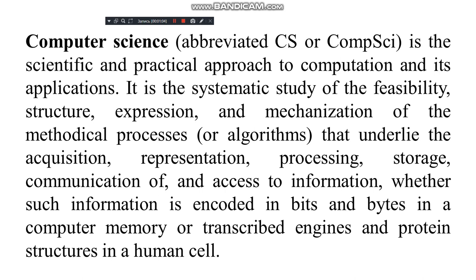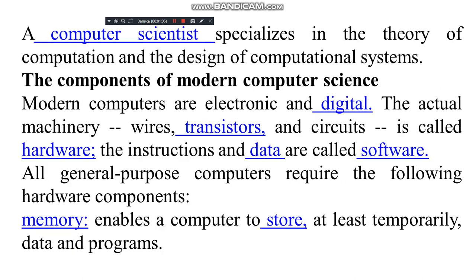Computer science is specialized in the study of computation and the design of computational systems. The components of modern computers are electronic and digital. The actual machinery — wires, transistors, and circuits — is called hardware. The instructions and data are called software.